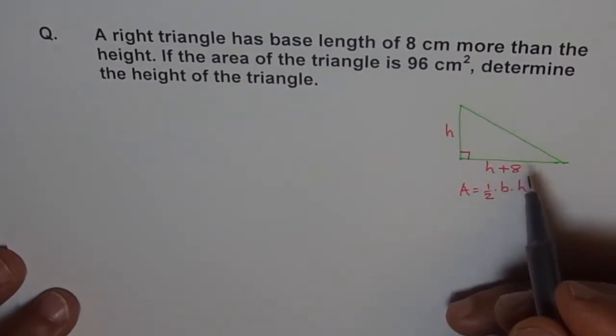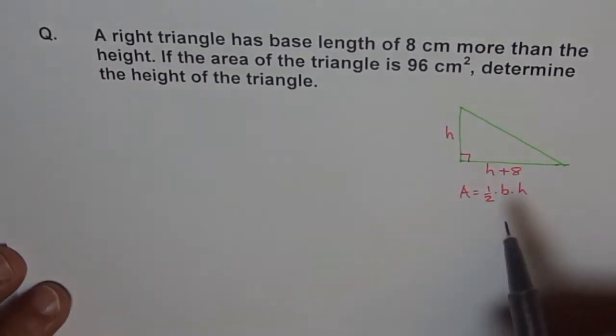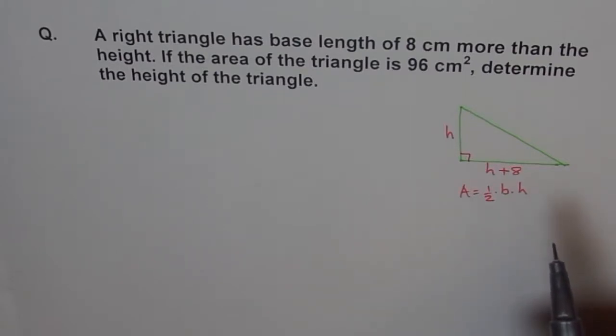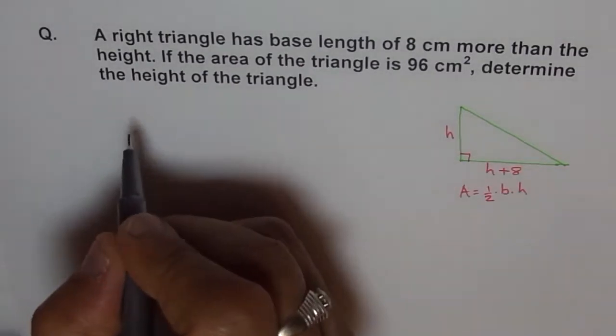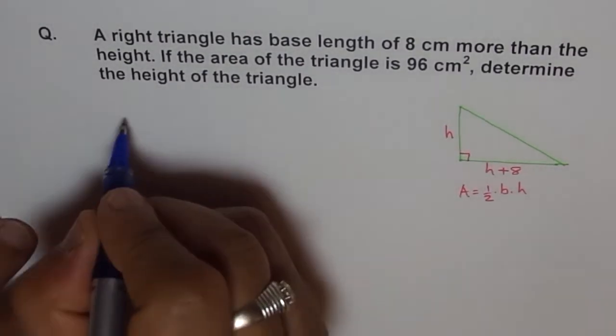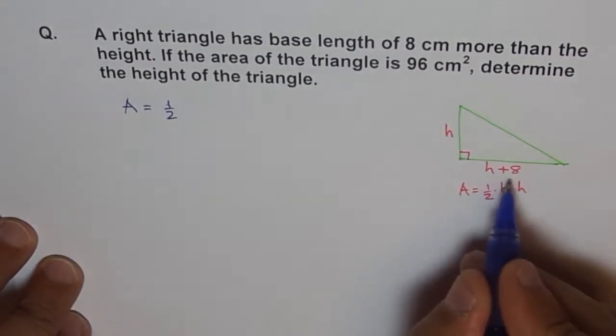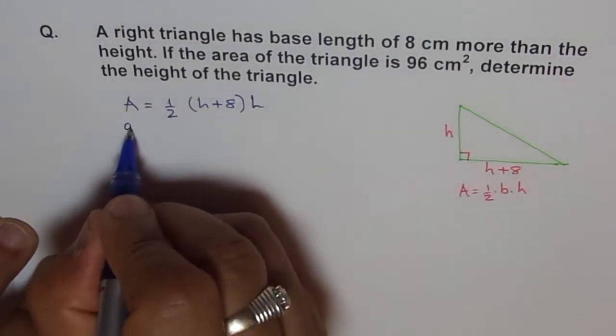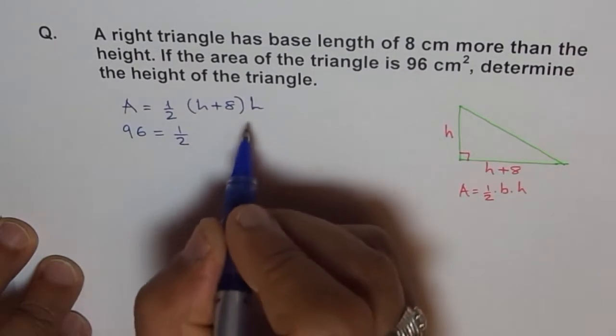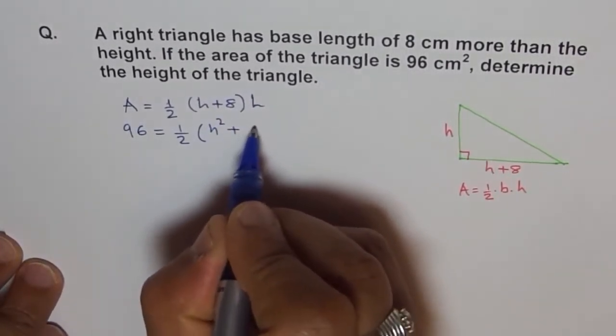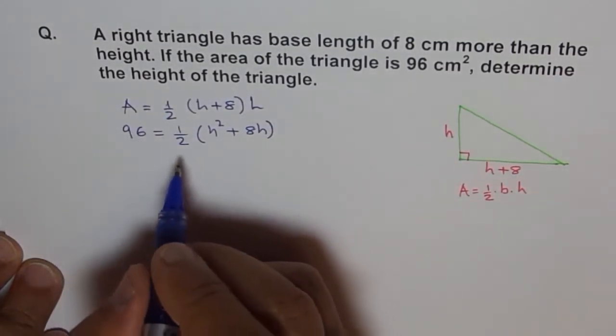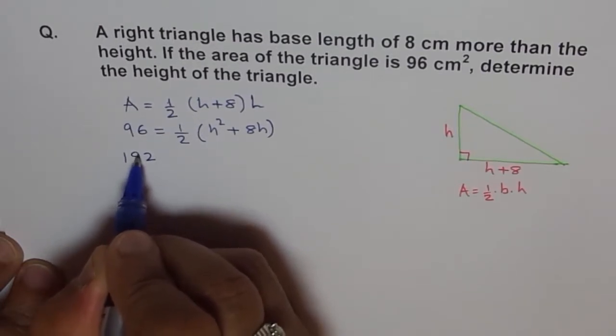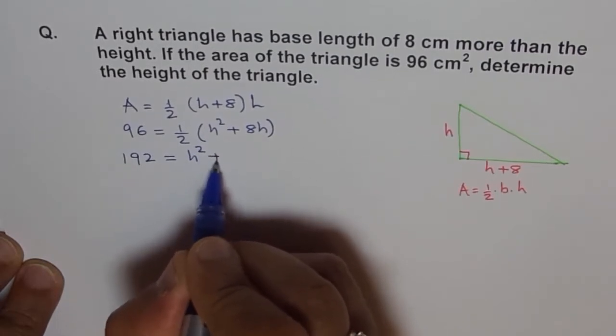Now, what is the area of a triangle? Area is 96 cm square, so this times this should give us 96 cm. We'll start doing with area. So, area of the triangle is half, and the base for us is h plus 8 times h, and area is given as 96. So 96 equals to half. We can open this bracket. It gives us h square plus 8 h. I'll multiply by 2 here, so 192 equals to h square plus 8 h.